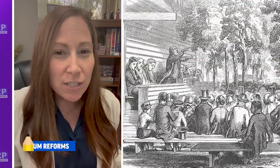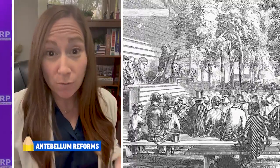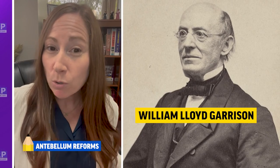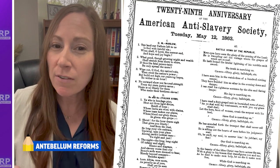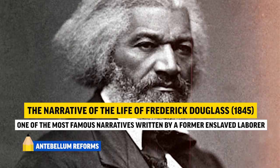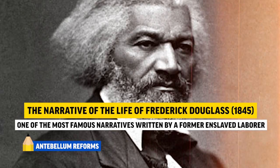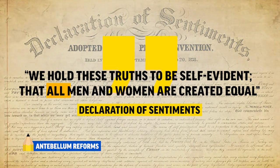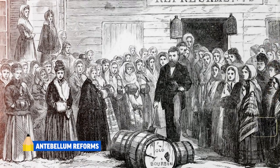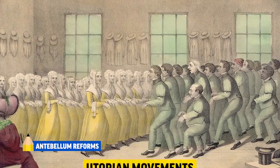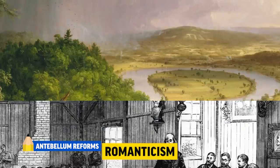The Second Great Awakening increased church attendance and inspired social and moral reforms. The abolitionist movement called for the end of slavery — leading abolitionists like William Lloyd Garrison published The Liberator and founded the American Anti-Slavery Society. Frederick Douglass, who was formerly enslaved, wrote his personal narrative illustrating the cruelties of enslavement. The women's rights movement met at the Seneca Falls Convention, led by Elizabeth Cady Stanton and Lucretia Mott, who drafted the Declaration of Sentiments calling for equality. Additional reforms include temperance, education, prison reform, and mental hospitals. America also saw the development of utopian communities, romanticism, and transcendentalism.